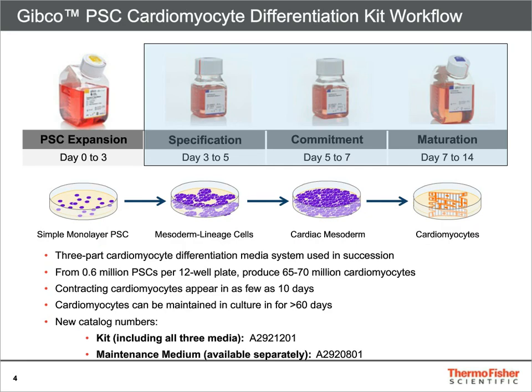Introducing the PSC Cardiomyocyte Differentiation Kit. This three-part kit of ready-to-use media differentiates PSCs to cardiomyocytes in 14 days in monolayer culture, with each medium used in succession as shown in the diagram at the top. From about 600,000 pluripotent stem cells, produce 65 to 70 million contracting functional cardiomyocytes with a single kit. Resultant cardiomyocytes can be maintained in culture greater than 60 days with cardiomyocyte maintenance medium, which is also sold separately.